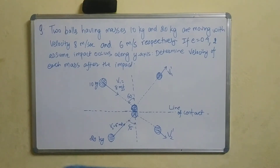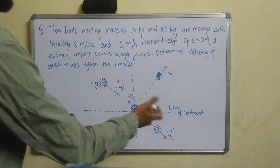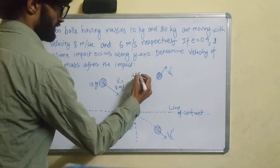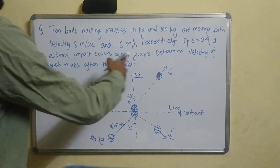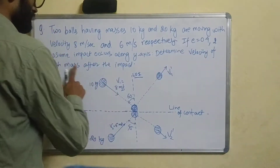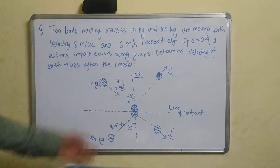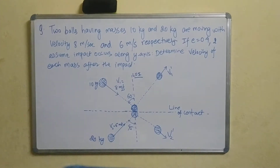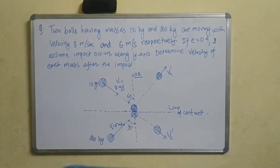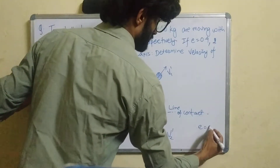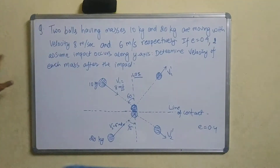The coefficient of restitution is equal to 0.4, and as the impact occurs along the line of impact, the coefficient of restitution is 0.4. The magnitude along the line of impact is 0.4 m/s.